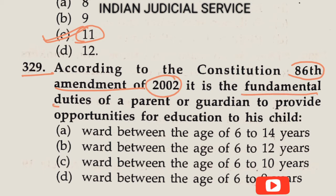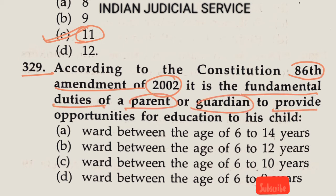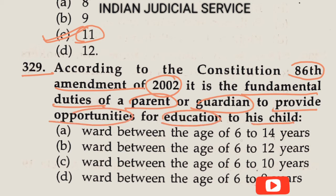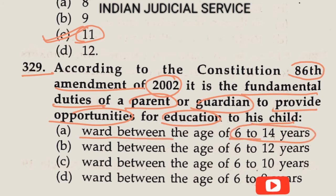Question Number 329: According to the 86th Constitutional Amendment 2002, it is the fundamental duty of the parent or guardian to provide opportunity for education to their children between the age of 6 to 14 years. The answer is clearly Option A.